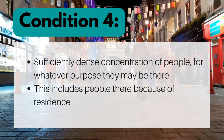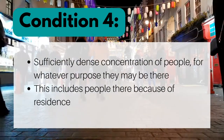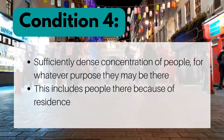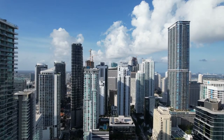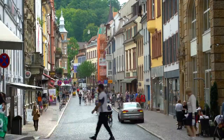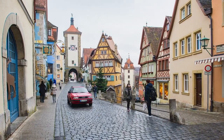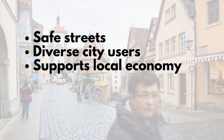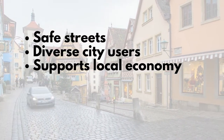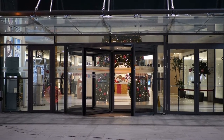Her fourth condition is the need for concentration. High population density is literally necessary to be considered urban, and her fourth condition is: a district must have a sufficiently dense concentration of people for whatever purpose they may be there. This includes people there because of residents. At the most basic level, a high concentration of people enables populated streets with many users and watchers, making them safer and livelier; a more diverse population that differs in behavioral patterns; and enough patrons to support local establishments at different times of the day. An enterprise that takes up a lot of room yet involves very few people does nothing to aid liveliness or diversity.